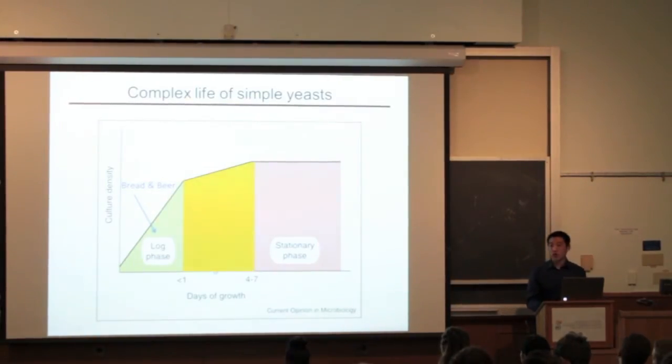When all the energy source in the culture is exhausted, the cells become quiescent, meaning they stop growing, and the cultures enter stationary phase.